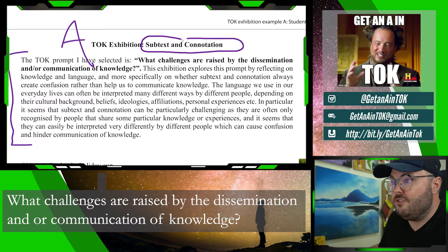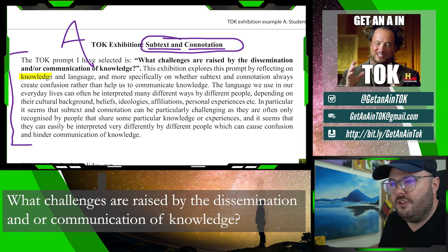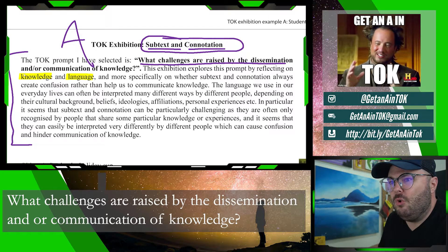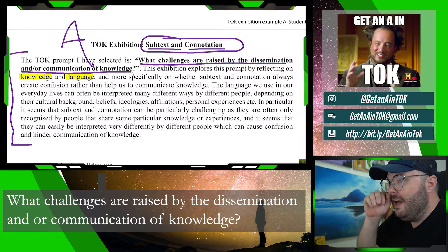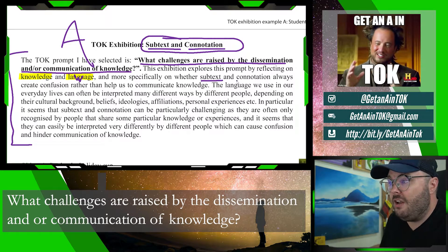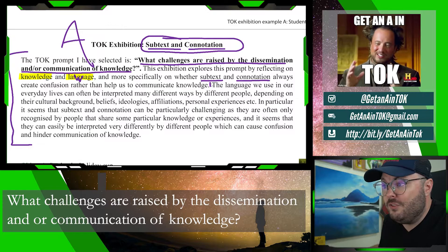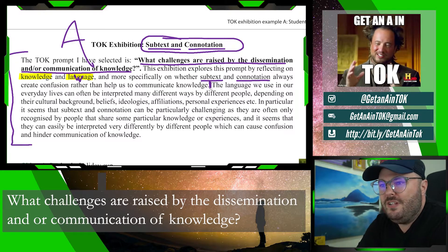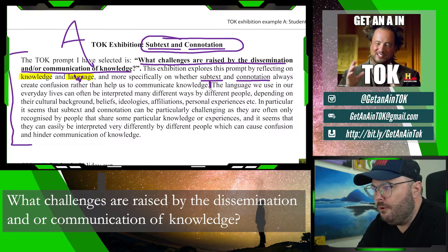They title their exhibition 'Subtext and Connotation,' and these are the two keys they're going to focus on the whole time. The TOK prompt selected is: 'What challenges are raised by the dissemination and/or communication of knowledge?' This exhibition explores this prompt by reflecting on knowledge and language — way of knowing — and more specifically on whether subtext and connotation always create confusion rather than help us to communicate knowledge. Honestly, I would stop right there, but they keep going. It's really good, but I don't think this additional content is necessary.